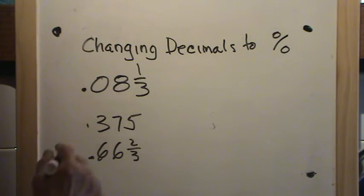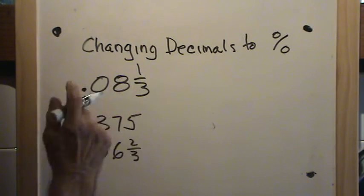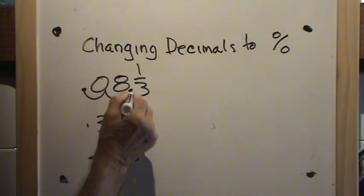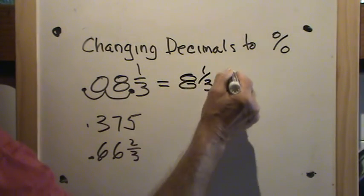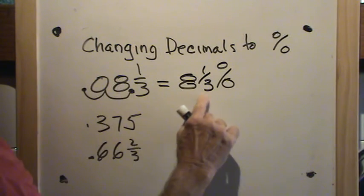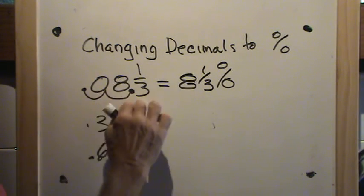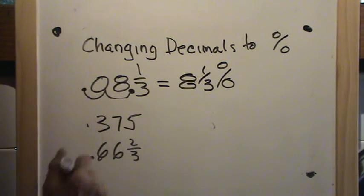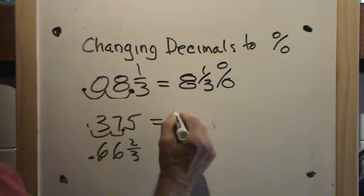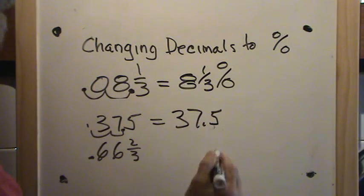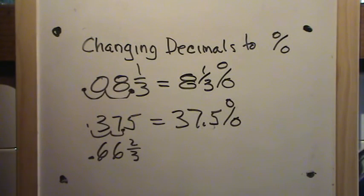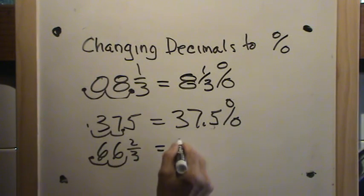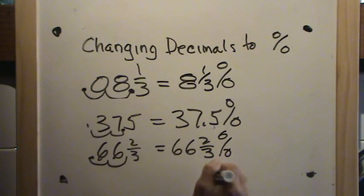Welcome back. Eight and one-third hundredths — move the decimal place two places to the right. We do not put the decimal point there because this is a fraction that follows it. So the decimal fraction eight and one-third hundredths is eight and one-third percent. Here, three hundred and seventy-five thousandths — two places to the right — we get thirty-seven and five-tenths percent. And here, sixty-six and two-thirds hundredths — two places to the right — gives us sixty-six and two-thirds percent. Again, we do not need the decimal point because we have the fraction two-thirds.